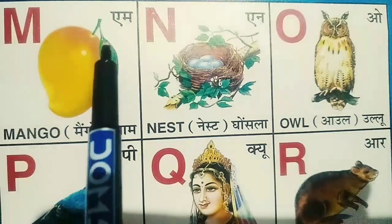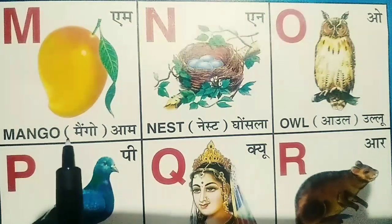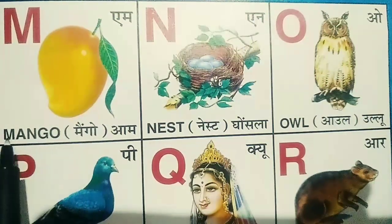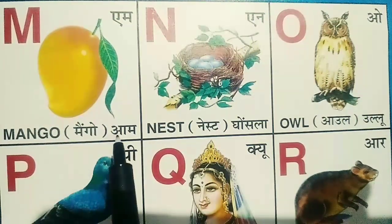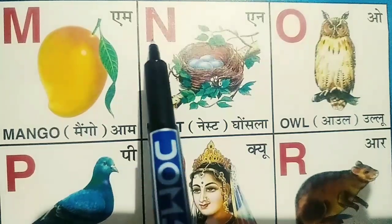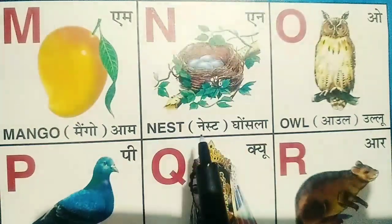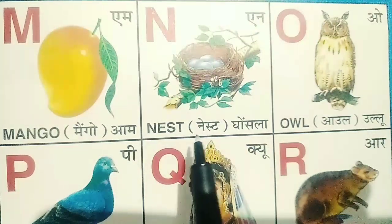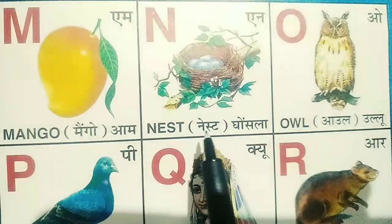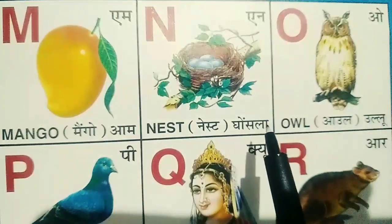M for mango. Mango means aam. N for nest. Nest means ghosla.